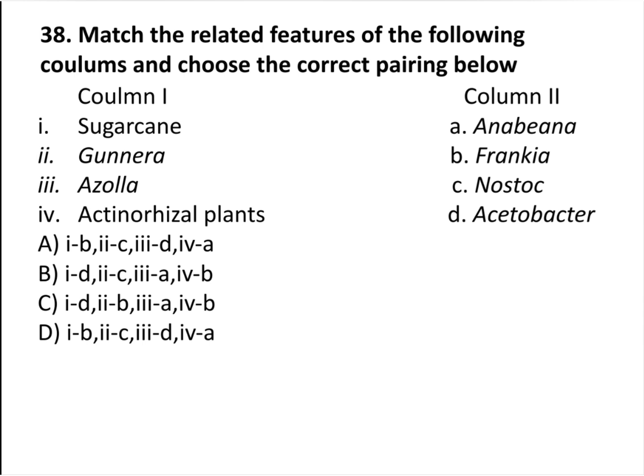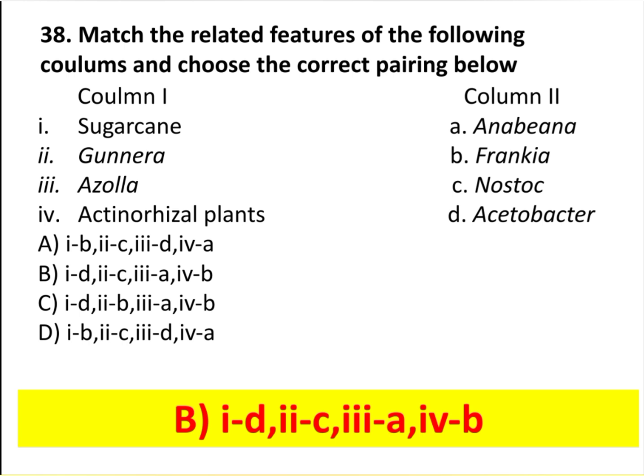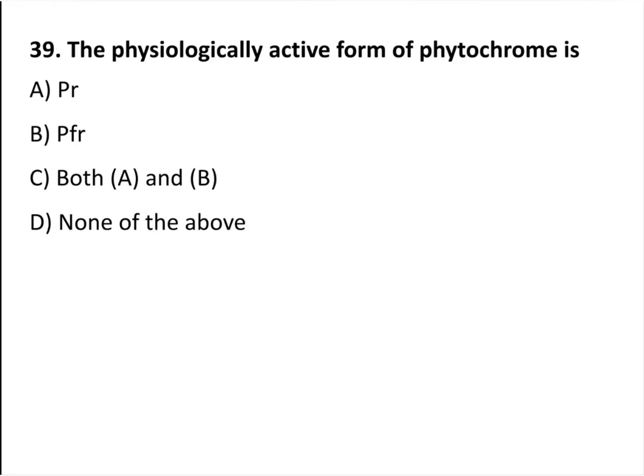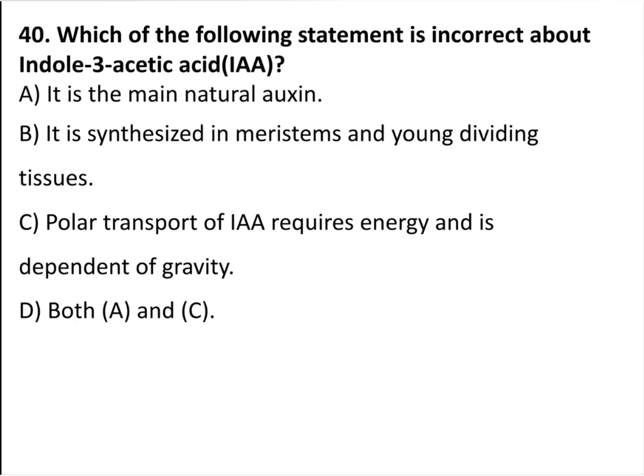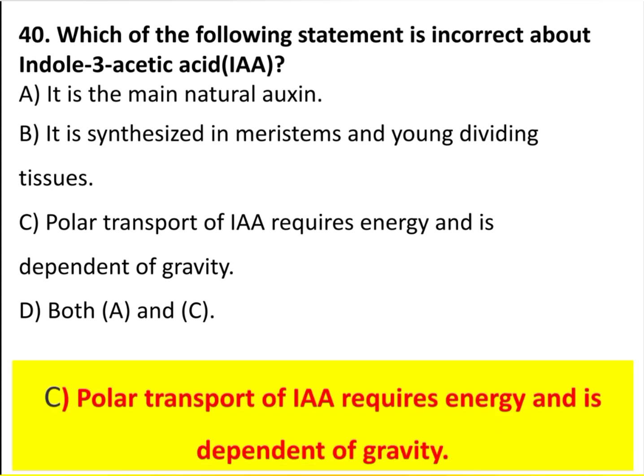Match the related features of the following columns and choose the correct pairing below — the answer is B part. The physiologically active form of phytochrome is Pfr. Which of the following statements is incorrect about indole-3-acetic acid? The answer is C part.